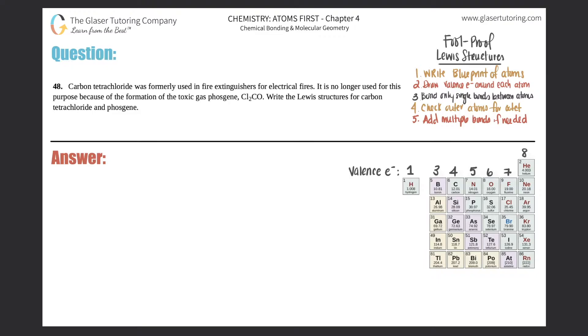Number 48. Carbon tetrachloride was formerly used in fire extinguishers for electrical fires. It is no longer used for this purpose because of the formation of the toxic gas phosgene, which is Cl2CO.